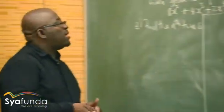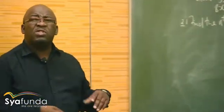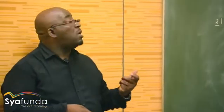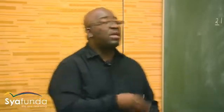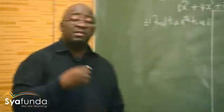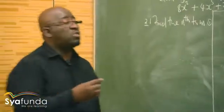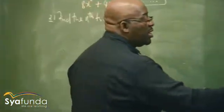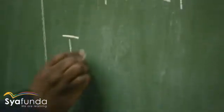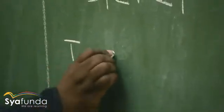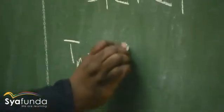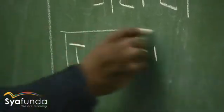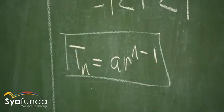Let's look at what we have here. Once we are told that it is a geometric sequence, we should know the general term. Tn is equal to ar to the power n minus 1. The general term will be equal to ar to the power n minus 1. This is the general term of the geometric sequence.